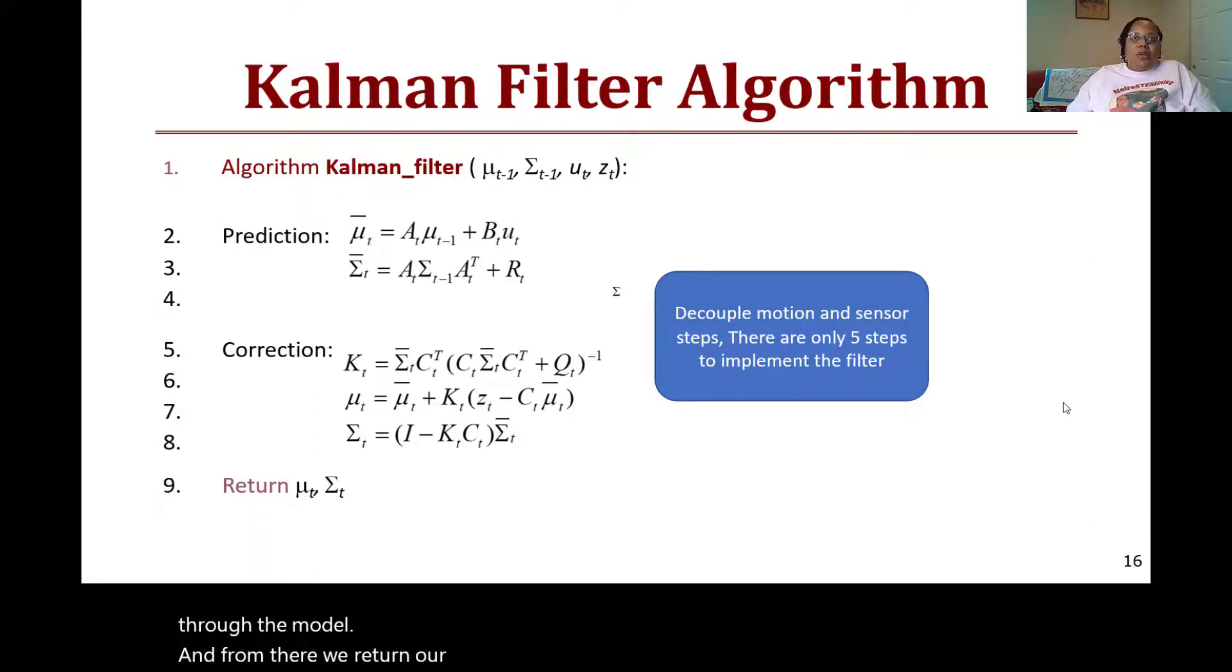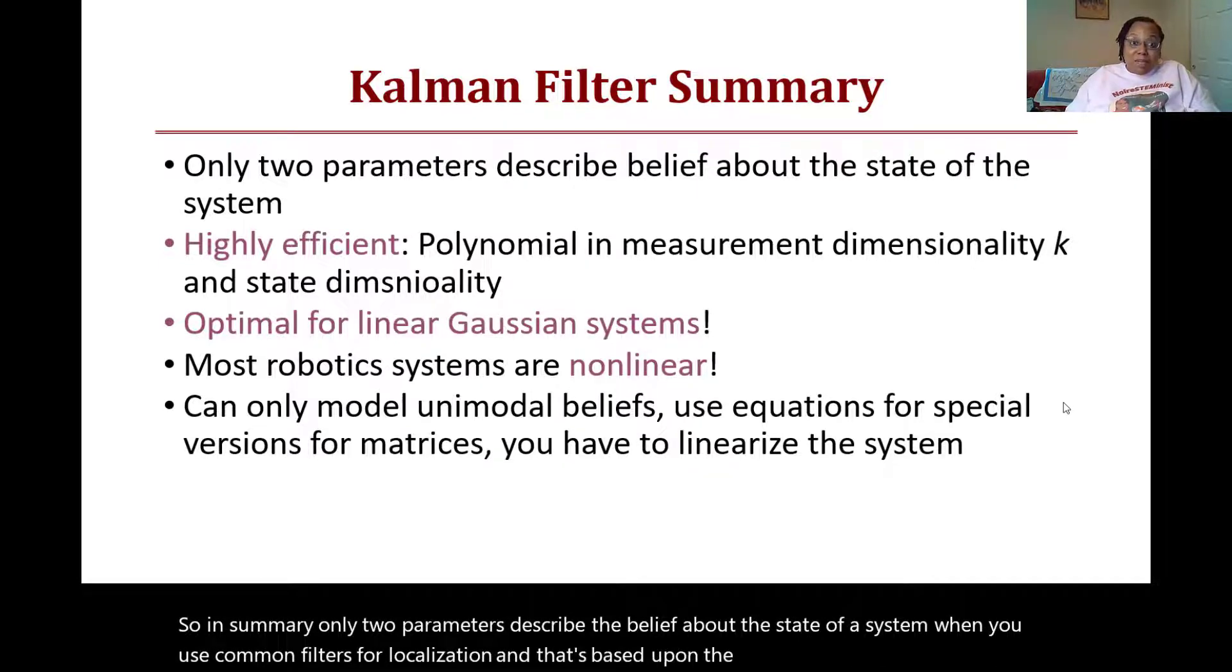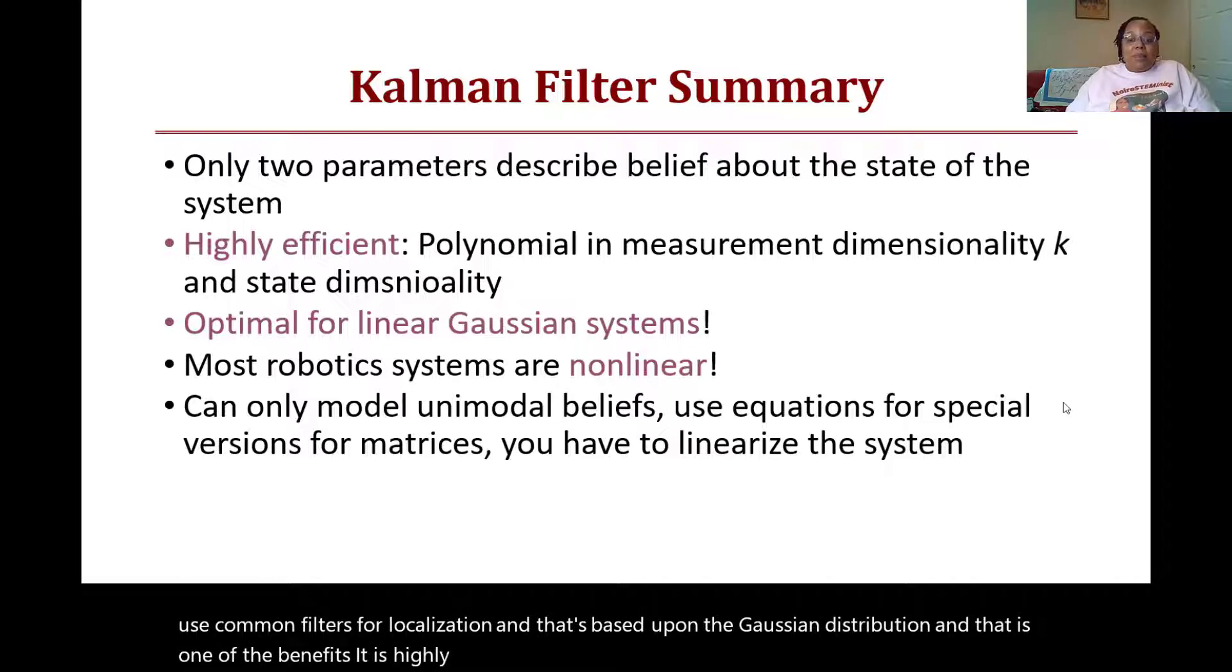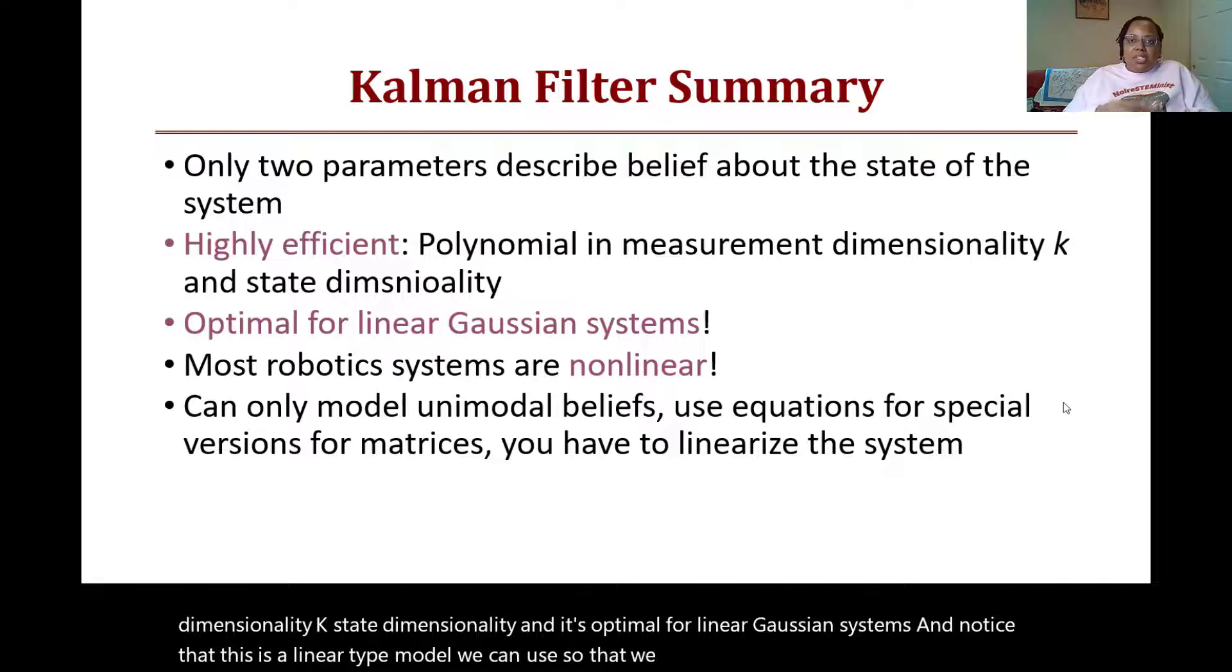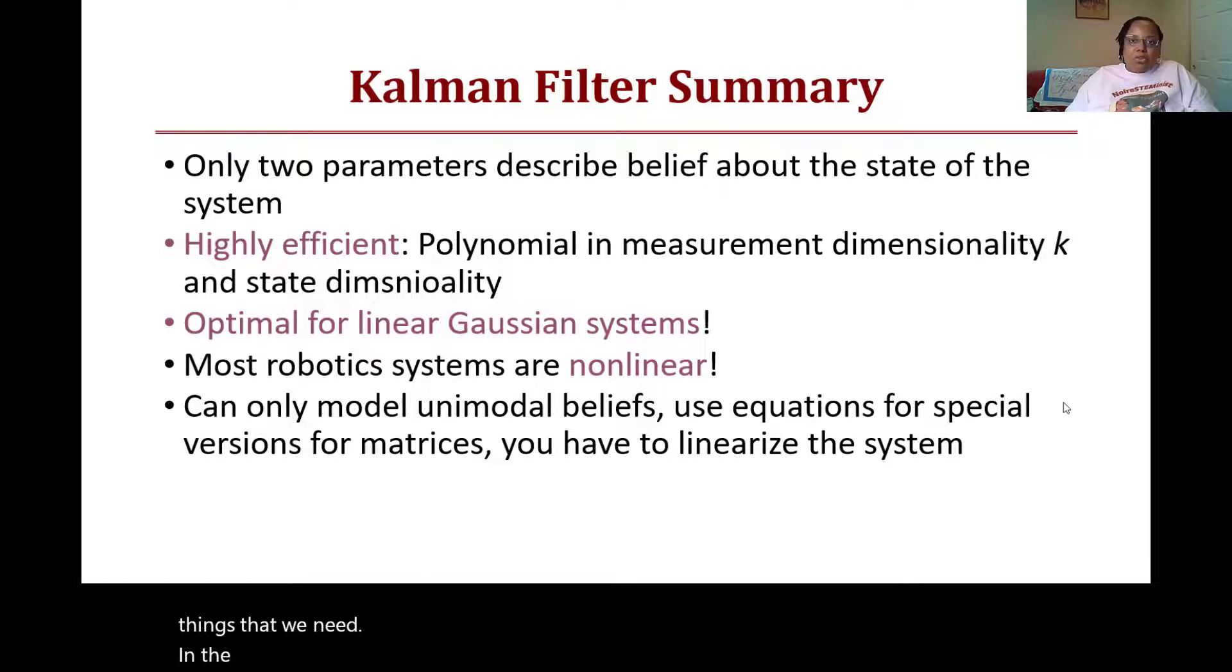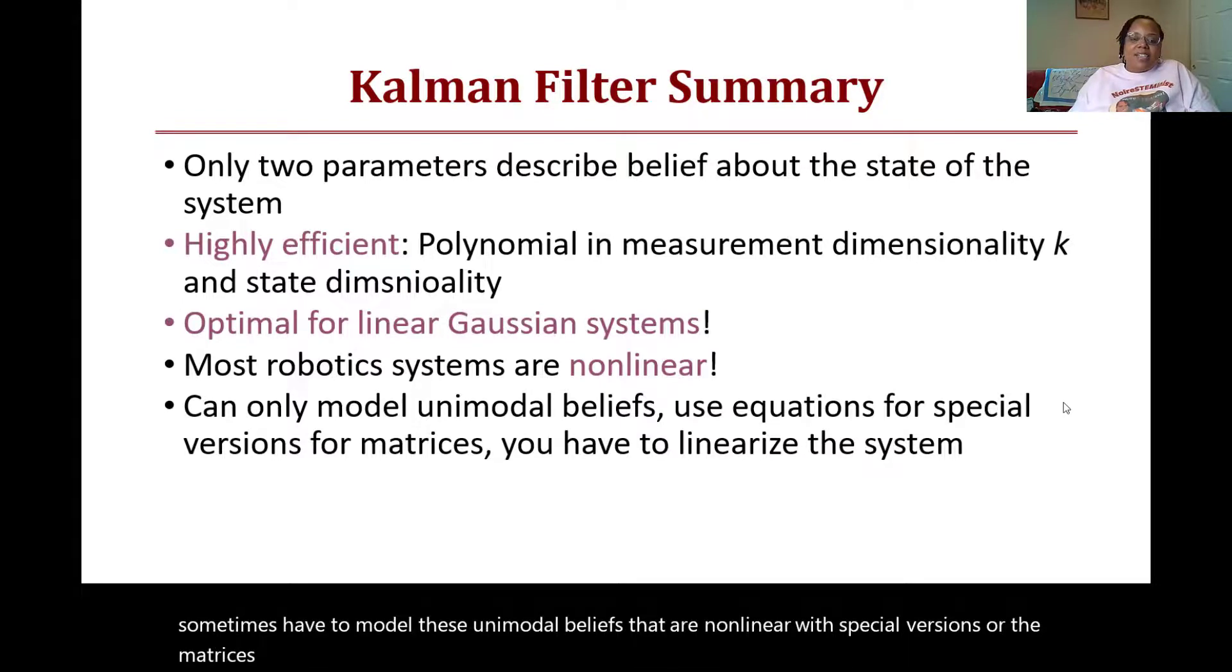In summary, only two parameters describe the belief about the state of a system when you use Kalman filters for localization, and that's based upon the Gaussian distribution. That is one of the benefits - it is highly efficient, where you have a polynomial in measurement dimensionality K and state dimensionality n. It's optimal for linear Gaussian systems. Notice that this is a linear type model we can use so that we can use matrices in order to calculate things that we need in the localization. But unfortunately, most robots are non-linear, so in order to use this we sometimes have to model these unimodal beliefs that are non-linear with special versions of the matrices, which means you have to linearize the system. This concludes our first lecture on Kalman filters. I hope you will come back for the next one, which is on Extended Kalman Filters. Have a robo-tastic day!